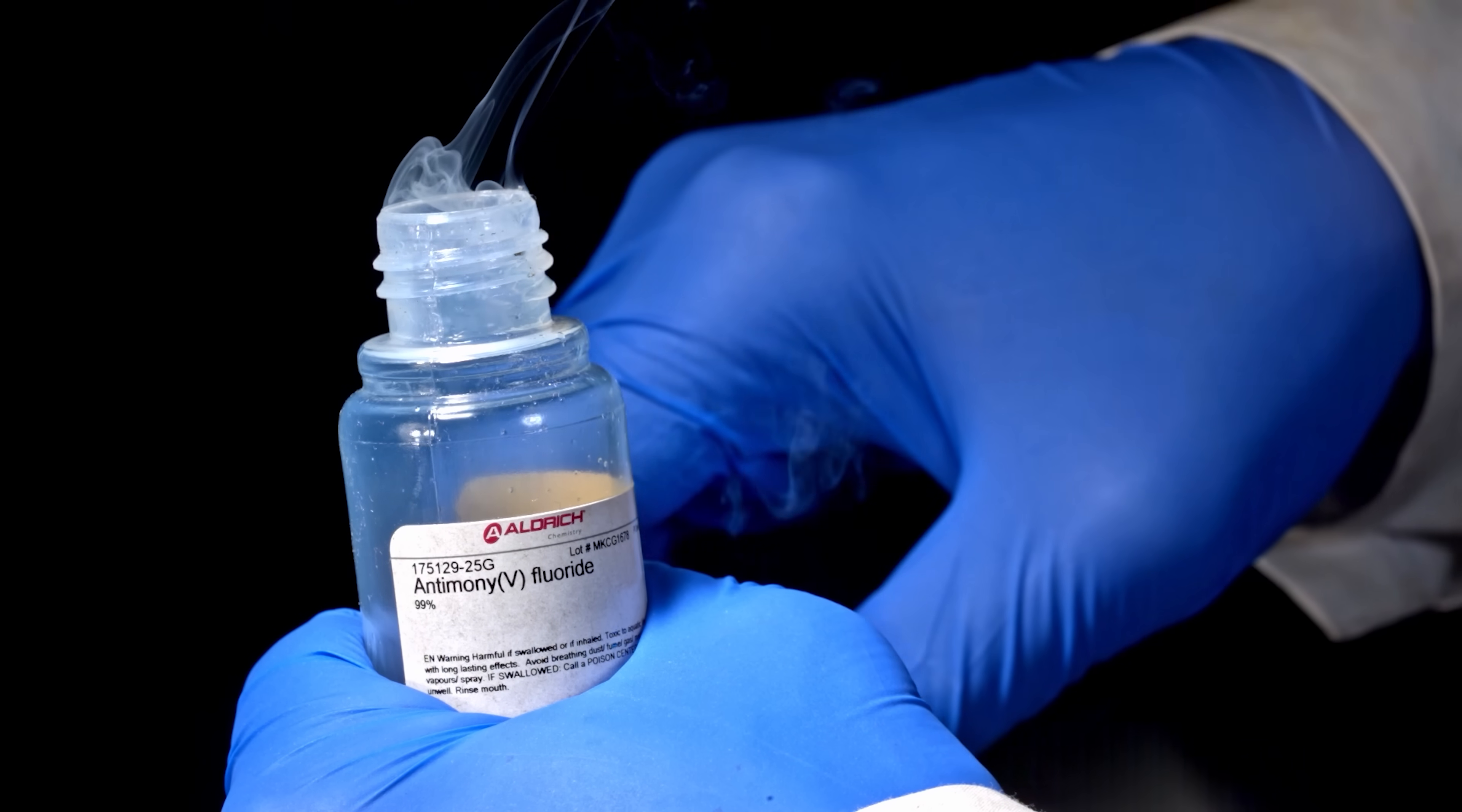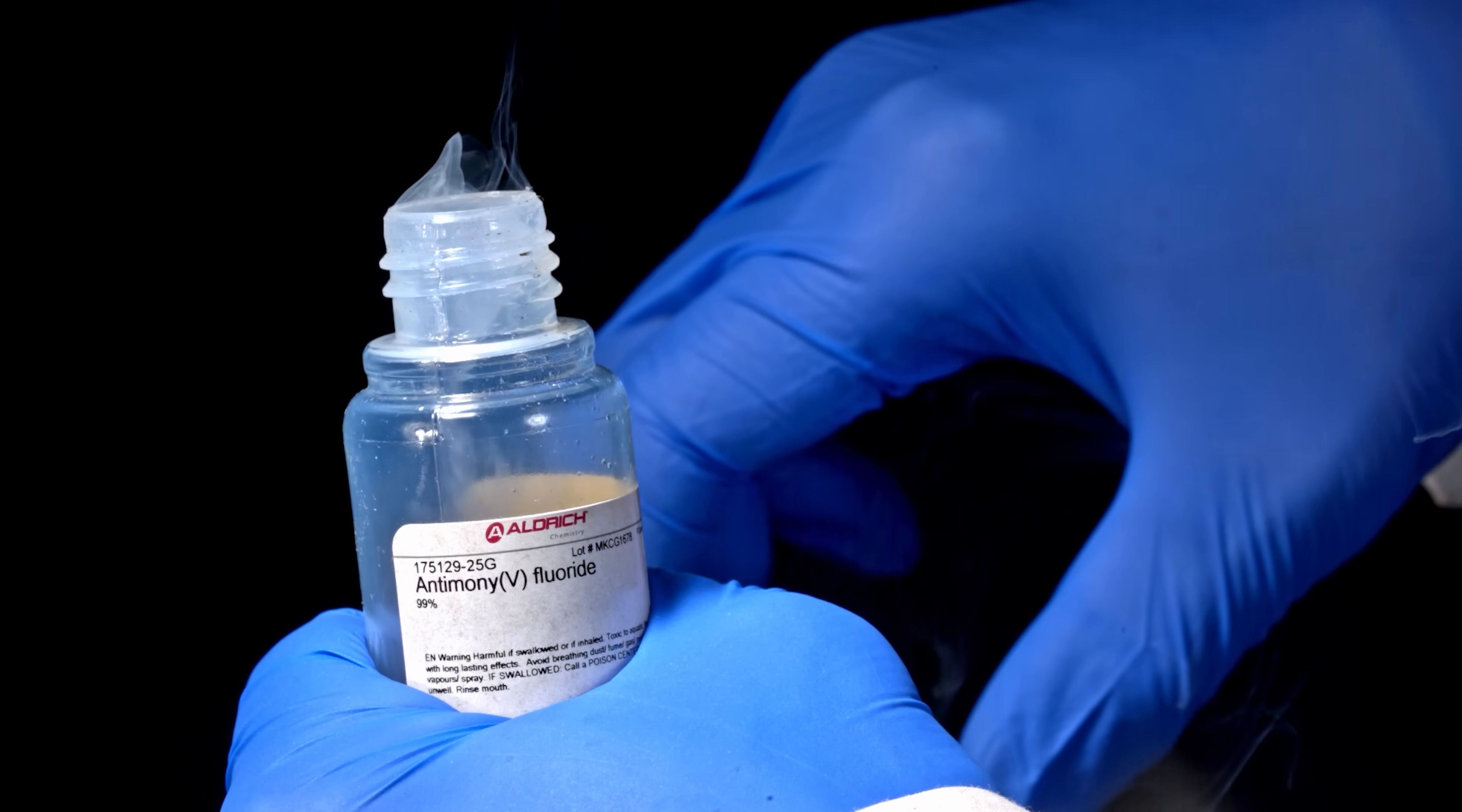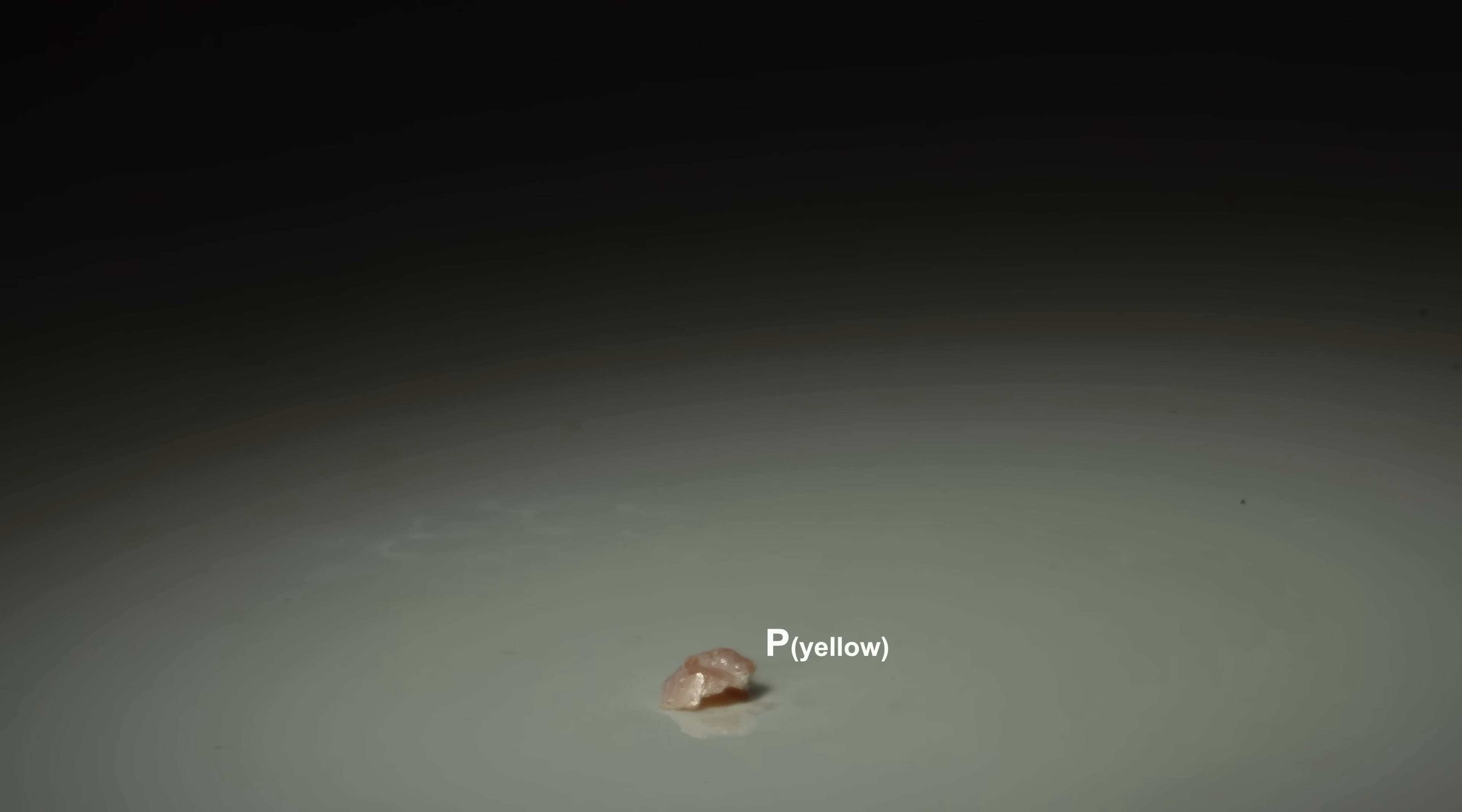So, antimony pentafluoride is a vigorous oxidizer and fluorinating agent. Phosphorus burns on contact with it.